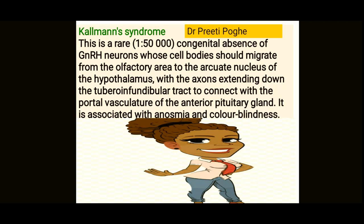Kallmann's syndrome is a rare but important cause of amenorrhea. It is the congenital absence of GnRH neurons — the cell bodies should migrate from the olfactory area to the arcuate nucleus of the hypothalamus, with axons extending down the tuberoinfundibular tract to connect with the portal vasculature of the anterior pituitary gland. It is associated with anosmia and color blindness; the absent GnRH neurons result in amenorrhea.